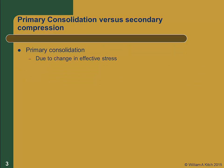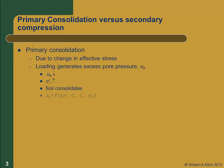As we have learned, primary consolidation is caused by a change in the effective stress in the soil. Some load is applied to the soil, and initially this creates an excess pore pressure. Over time, that excess pore pressure dissipates. The effective stress increases, transferring load to the soil skeleton. In response, the soil skeleton compresses and the soil consolidates. The magnitude of the primary consolidation is a function of the magnitude of the change in effective stress and the soil compressibility properties.